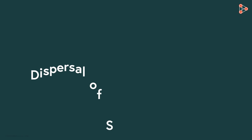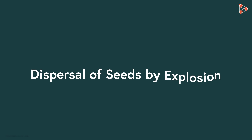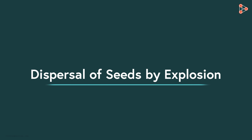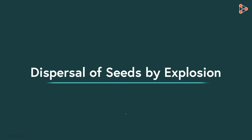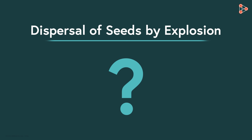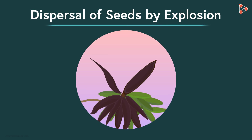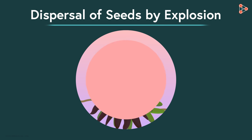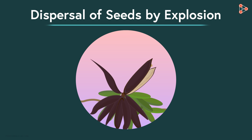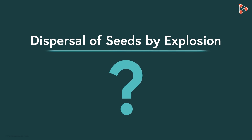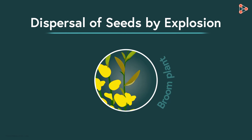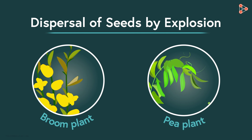The next type is called dispersal by explosion. In some cases, fruits or pods containing seeds burst on their own. The pods dry and split open suddenly with considerable force, which throws the seeds to a distance. Plants like broom and peas belong to this category.